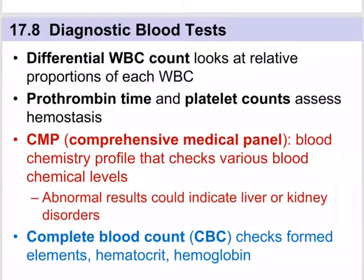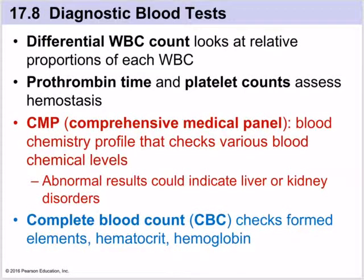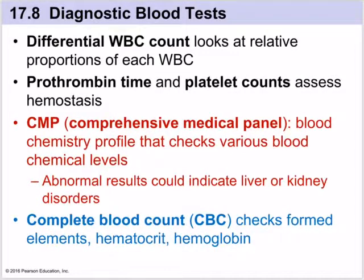Briefly about developmental aspects of the blood: prior to birth, most blood cell formation occurs within the fetal yolk sac, which we will discuss in the third term when we cover development in the womb. Blood cell formation also occurs in the liver and the spleen prior to birth. However, by about the seventh month of fetal development, red bone marrow becomes the primary site of hematopoiesis, or blood cell formation, and after the seventh month it remains as the primary site.